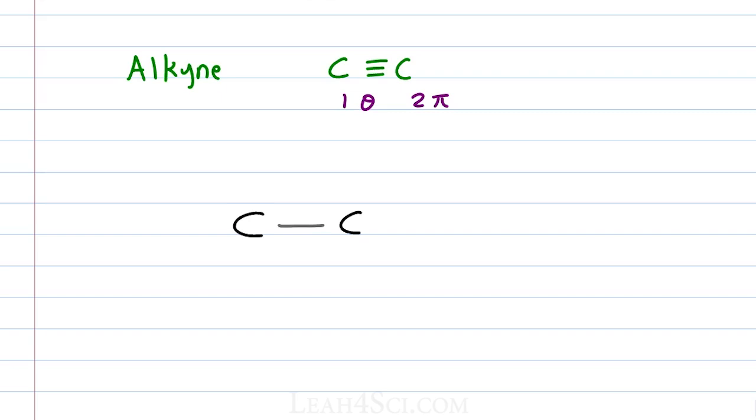If we look at these 2 carbons, the gray line between them would represent the sigma bond. In the y plane, we'll show the p orbital going up and down and when these overlap, we get our first pi bond